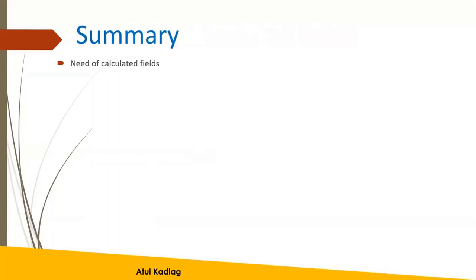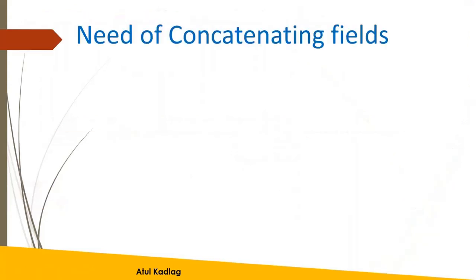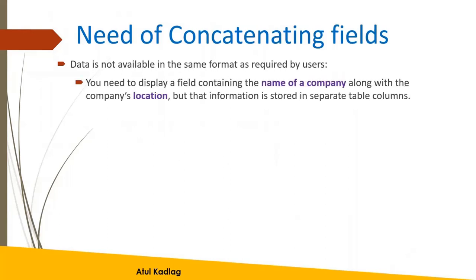In summary, we have seen what is the need of calculated fields and why it is needed, and we have seen some of the different calculated fields. The very first thing we are going to look at is concatenating fields — how to concatenate fields in this lesson. We'll look at what is the need for concatenating fields and some examples to help understand the concepts. The key point is that data is not always available in the same format as required by the user — for instance, company name and location are stored in two separate columns, but we want to combine them into a single column.